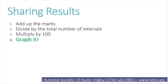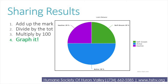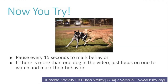Now that we have our percentages, if you'd like to make a pie chart like the one we saw previously, feel free — I made one so you can look at it. We can see that Lola spent 50% of her time being active, 25% being inactive, and 25% self-grooming.